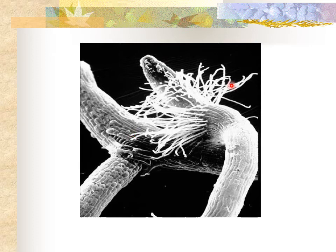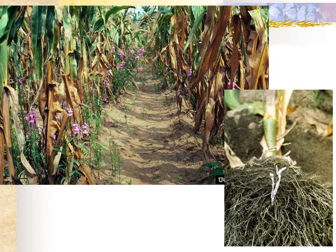Just one more example of the parasitism in this group being a nuisance to crops: here we have corn, and all the flowers mixed in are members of the genus Striga, which are parasitizing the roots of the corn. Definitely a nuisance.